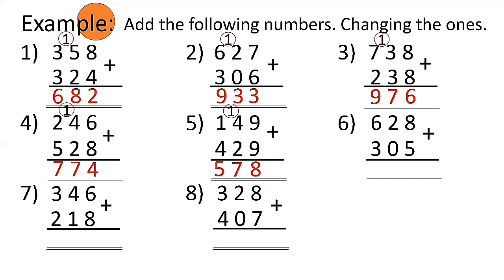Number 6: 628 plus 305 — 8 plus 5 is 13, bring down 3, carry 1 to the tens place. 2 plus 0 is 2 plus 1 is 3 in tens. And 6 plus 3 is 9 in hundreds. So the answer is 933.